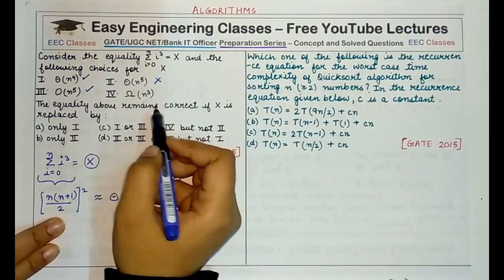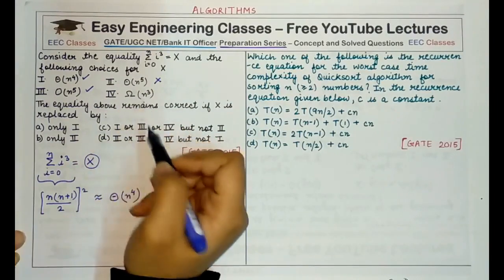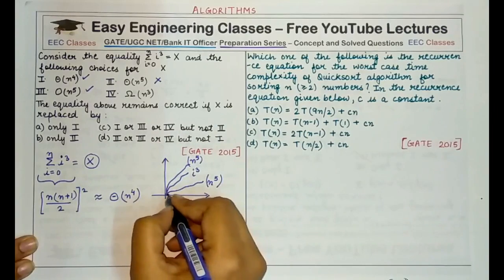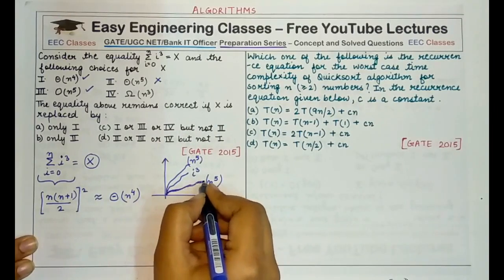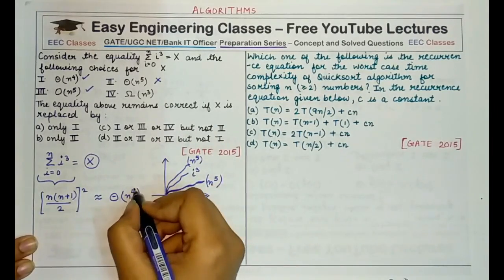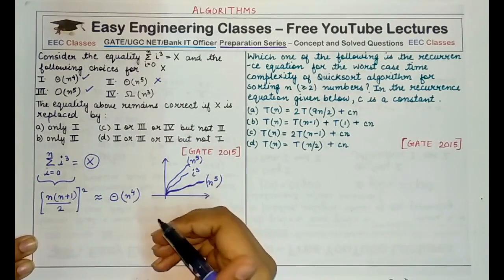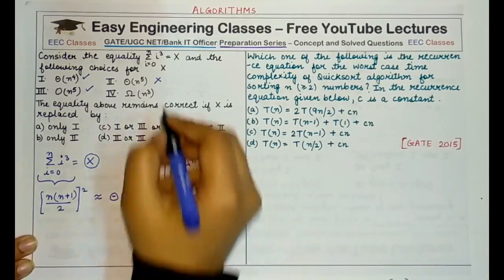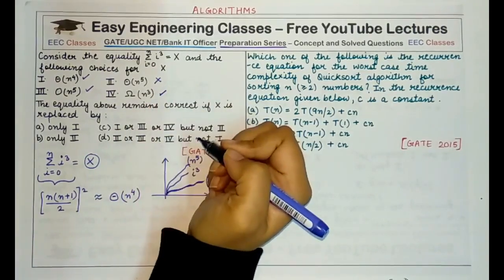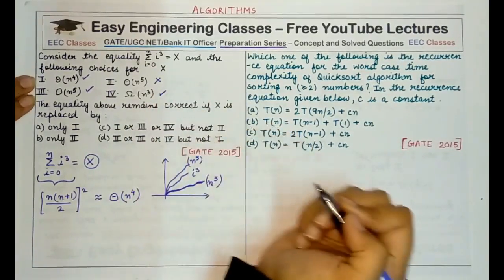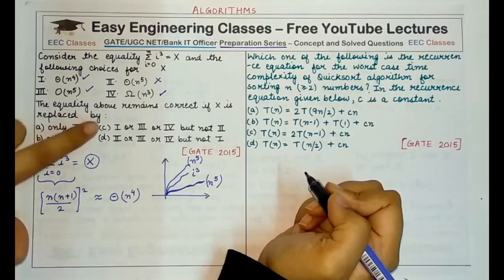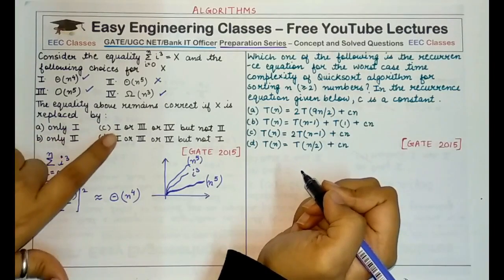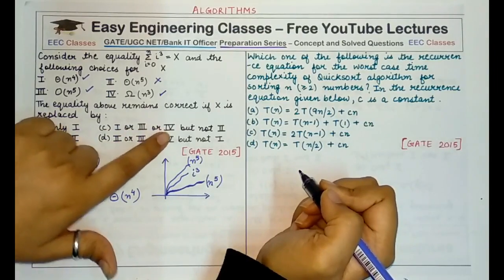Coming to the fourth option, omega of n³: omega means a lower bound. Can we say that n⁴ is lower bounded by n³? Definitely yes. So this option is also correct. Therefore, options 1, 3, and 4 are correct but not option 2, making option C the correct answer.